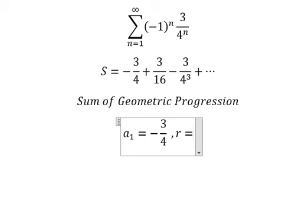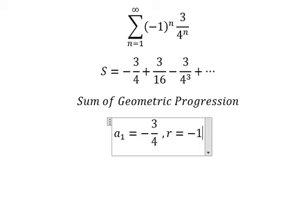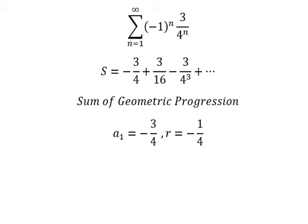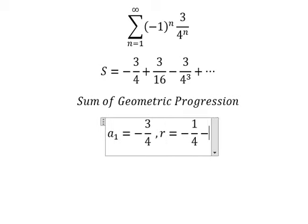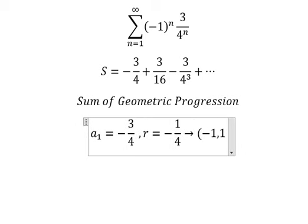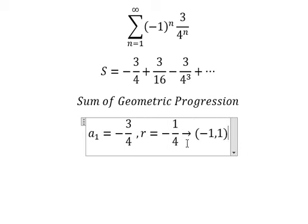And r, that is negative one over four. We can see that this one is between negative one to positive one, so we can apply the formula.